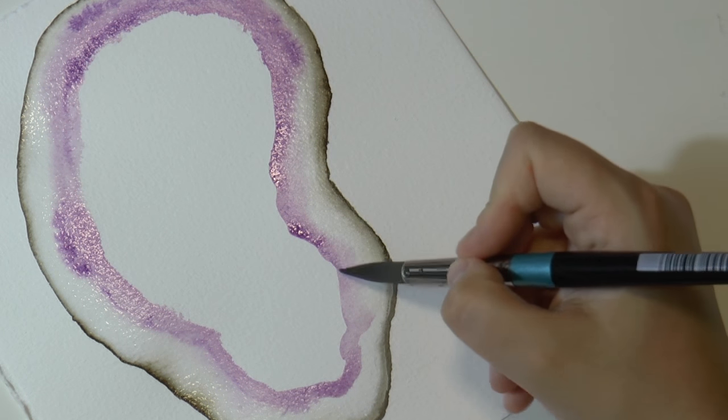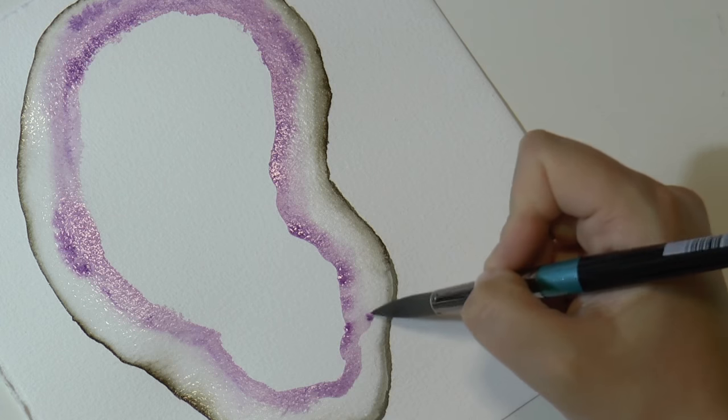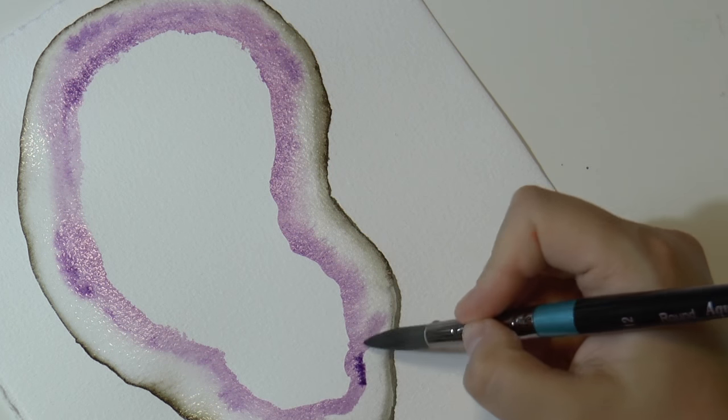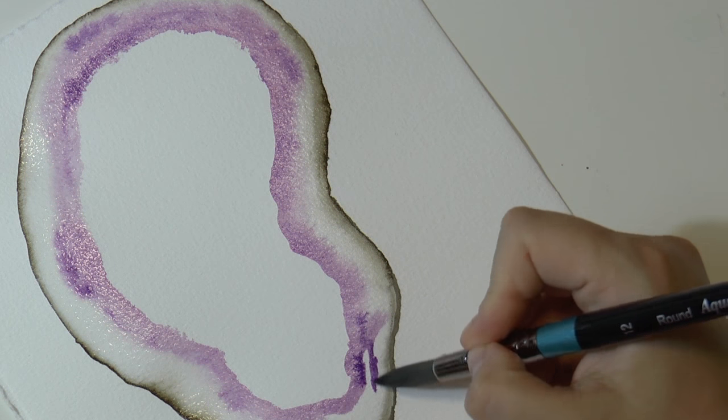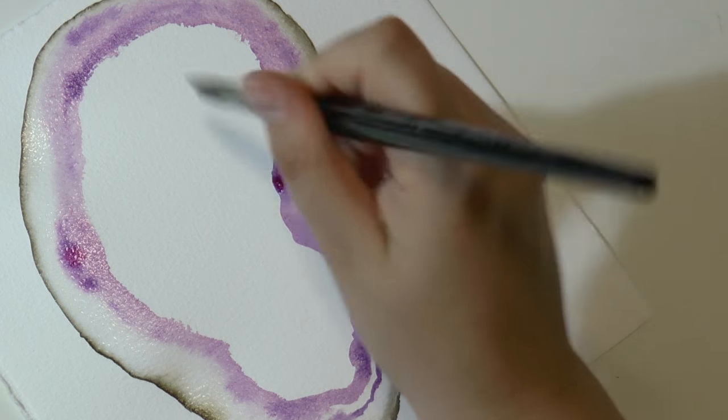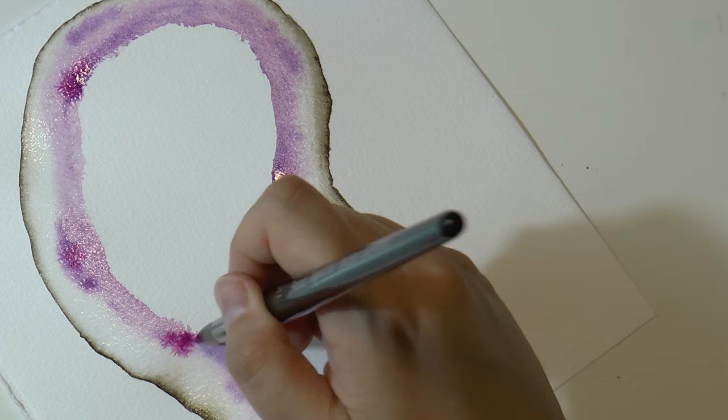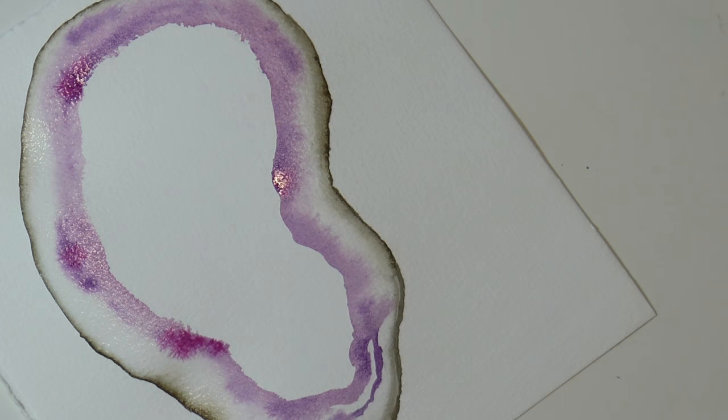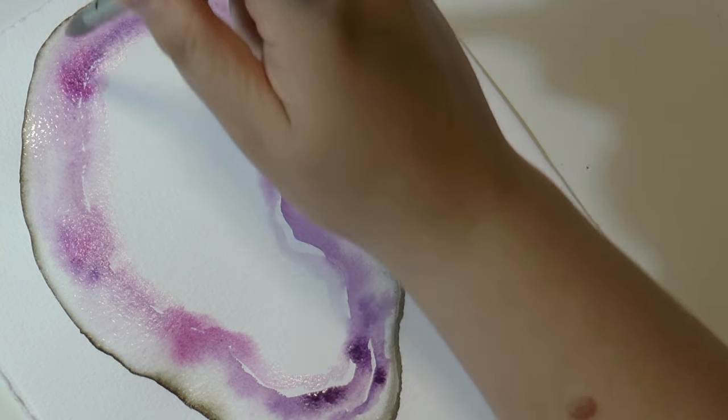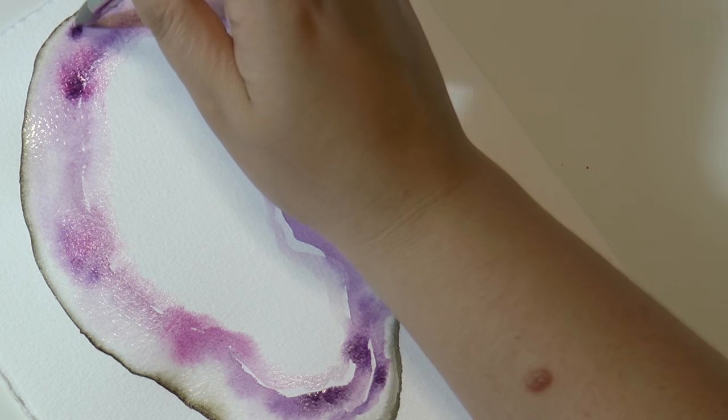And then I intensify my color with more pigment. I suggest you to be creative and use like two or three different shades of purple and one of those shades should be a little bit warmer than the others, so more like a kind of a reddish purple.